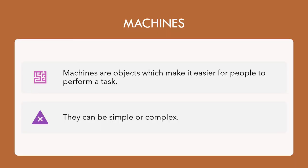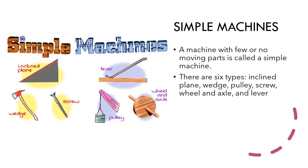Machines are objects which make it easier for people to perform a task. They can be simple or complex. Simple machines are the ones that you can see in these pictures. A machine with few or no moving parts is called a simple machine.